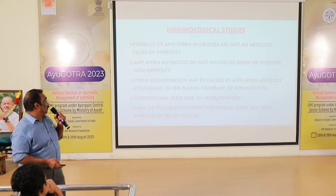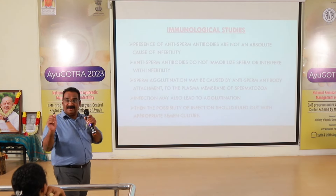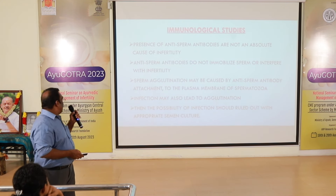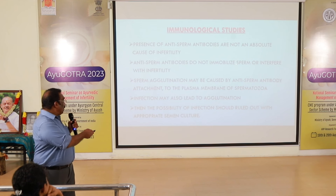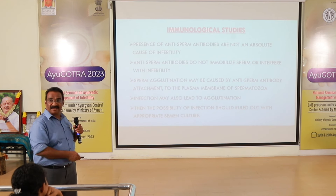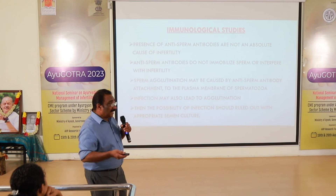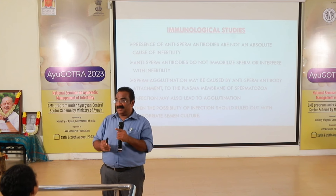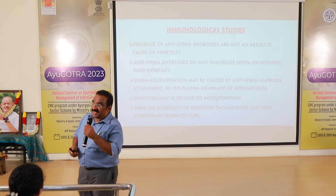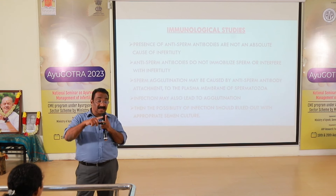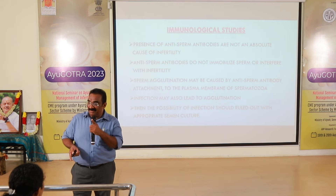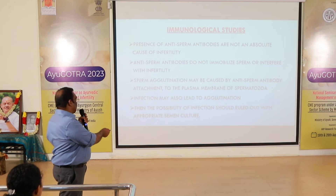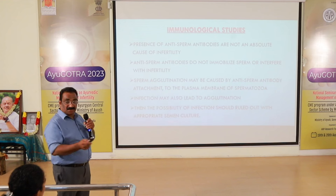Immunological study: the presence of anti-sperm antibodies is not an absolute or all-or-none cause of infertility. Anti-sperm antibodies do not directly immobilize sperm, but they interfere with sperm penetration through the cervical mucus, altering spermatozoa movement through the cervical mucus. That is why bypassing the cervical canal with IUI is used. Sperm agglutination may be caused by anti-sperm antibody attachment.